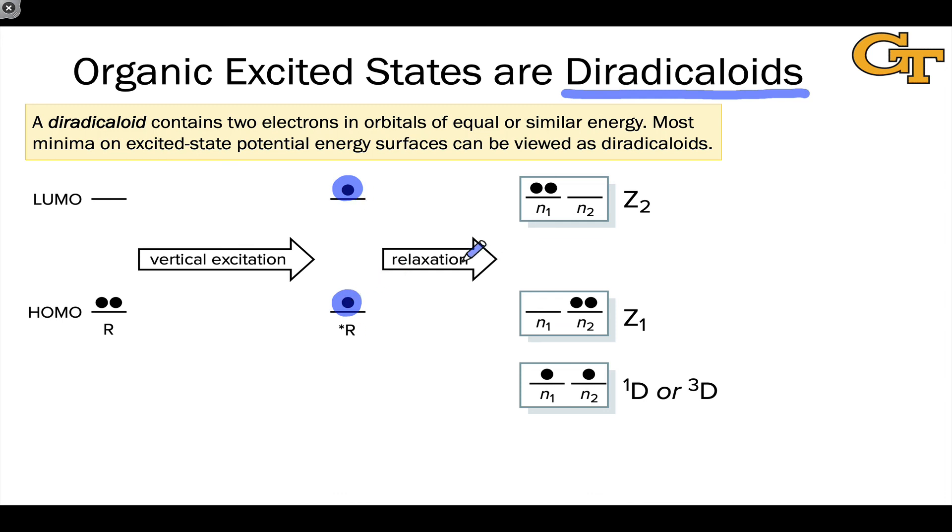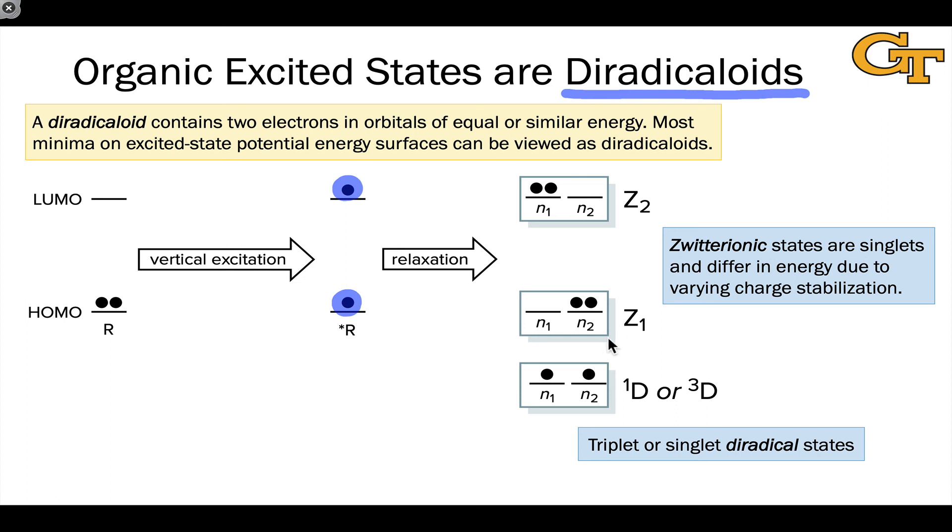And so after the photoexcitation event, there's this relaxation phase where the di-radical-oid, R star, evolves into something that is in the vicinity of a ground state potential energy surface. And this state that it evolves to can fall into one of two classes. It can either be a di-radical state where the unpaired electrons remain unpaired in orbitals that are either equal or very close in energy. And these may be either singlet or triplet. So we talk about singlet di-radicals or triplet di-radicals. If the electrons end up paired, which must involve opposite spins, must involve singlet states, we end up at what are called Z states or zwitterionic states. These may differ in energy if, for example, it's more stable to place the electrons in the N2 orbital as opposed to N1. And this is a very common situation if we're talking about some kind of polarized chromophore. The D and Z states are going to have very different reactivity, very different dynamics.